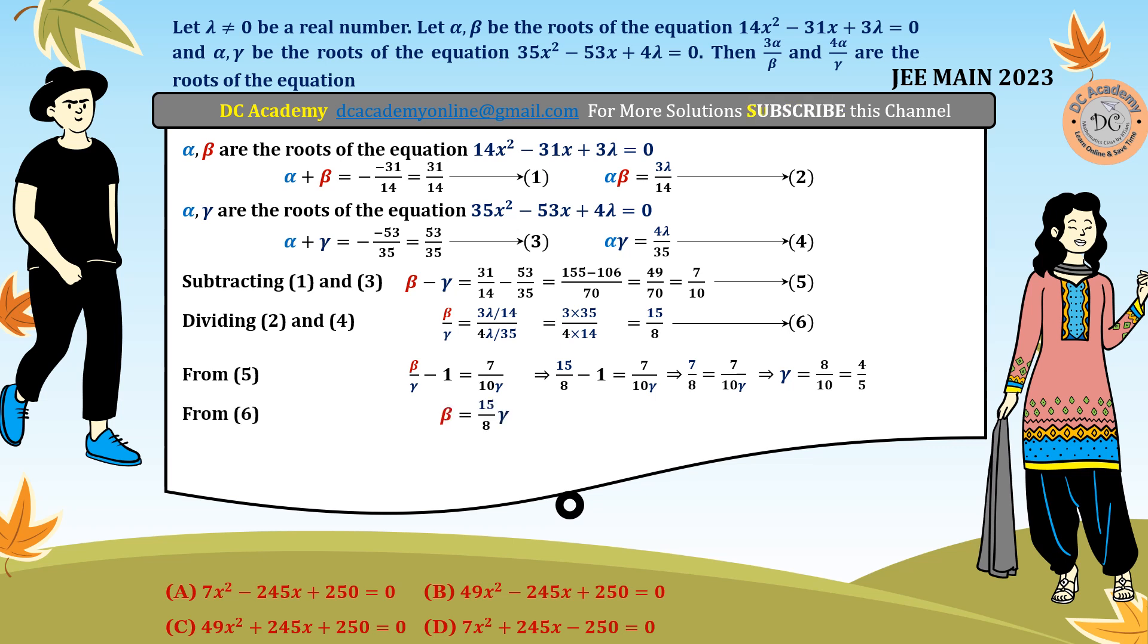When γ is obtained, by equation 6 we can easily obtain β = 15/8 × γ. Substituting γ = 4/5, we get β = 3/2. Going to equation 1, since β is known, α = 31/14 - β = 5/7. Therefore, we obtain α = 5/7, β = 3/2, and γ = 4/5.